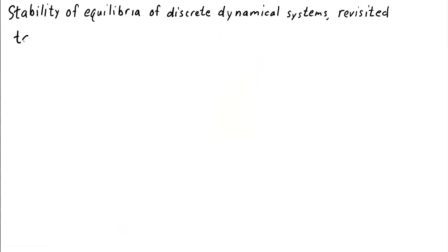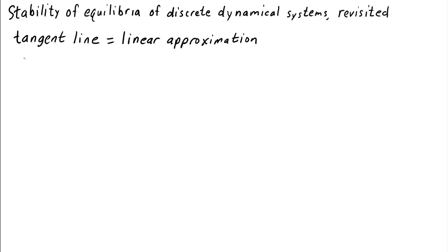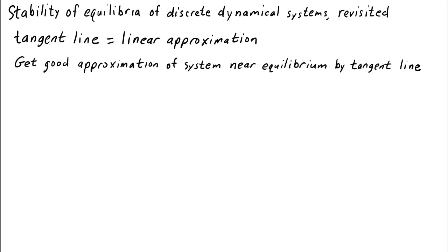We can understand these results because the tangent line equals a linear approximation of the function. This means we get a good approximation of the behavior of the system near the equilibrium using its tangent line. In the applet, you could zoom in and see how close the graph of the function is to the graph of the tangent line, and see how, if you cobwebbed using the tangent line, you'd get almost the same result as if you cobwebbed using the function itself.